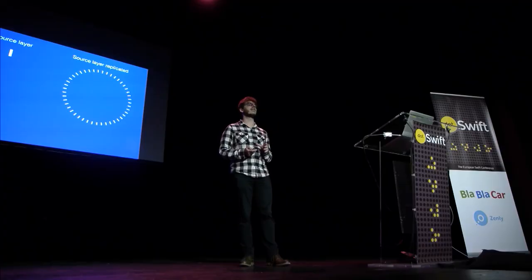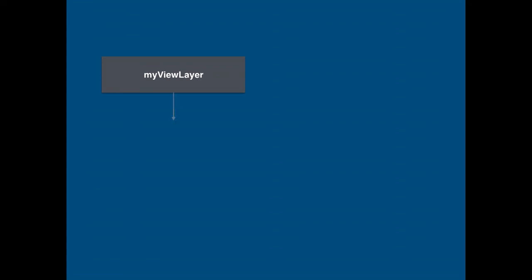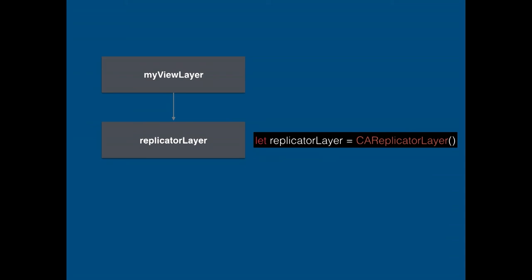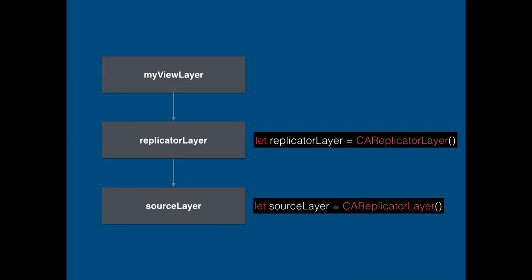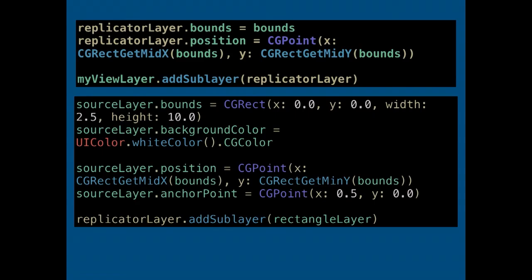Before seeing the code, let's have a look at the layer hierarchy. We have a custom view, and our Replicator Layer is a sublayer of our view's layer. The Replicator Layer acts as a container that will replicate every sublayer of its layer. Our source layer is added as a sublayer of the Replicator. It's very important to set its bounds and position so that it overlaps completely with the super layer — set its bounds to the bounds of the super layer and its position to be centered.